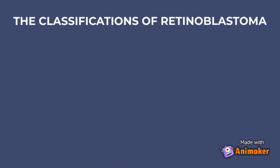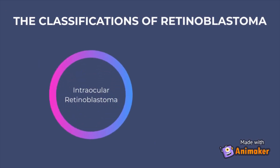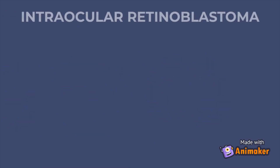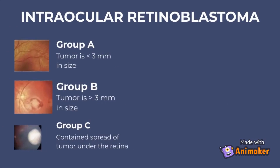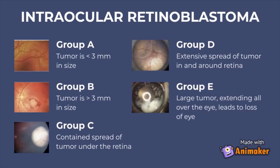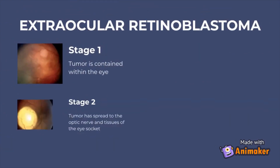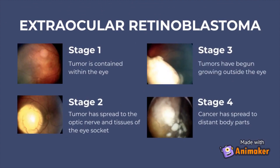When it comes to diagnosing retinoblastoma, it is important to note that retinoblastoma can be divided into two categories: intraocular retinoblastoma and extraocular retinoblastoma. Intraocular retinoblastoma can be divided into five groups, A to E, based on how likely the eye can be saved, and refers to cancer being contained within the eye. Extraocular retinoblastoma is divided into four stages, stages 1 to 4, based on the spread of the cancer, and refers to cancer spreading outside of the eye to distant parts of the body.